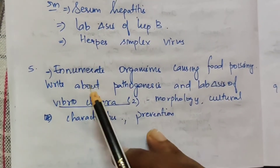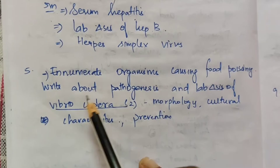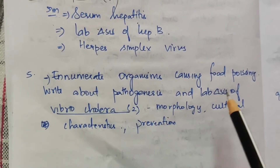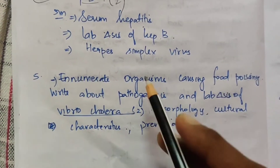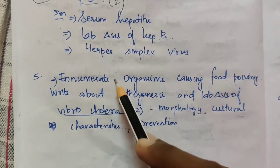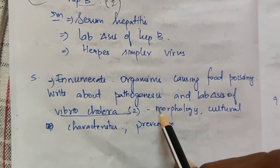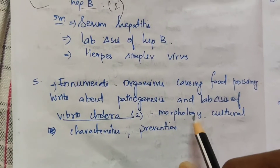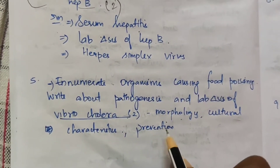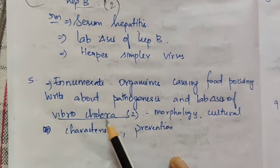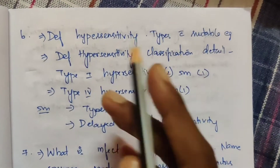Check in detail about the lab diagnosis of hepatitis C. Write about pathogenesis and lab diagnosis of Vibrio cholerae — this question has appeared overall 2 times. In particular, in the 15-mark section: morphology, cultural characteristics, and prevention of Vibrio cholerae.